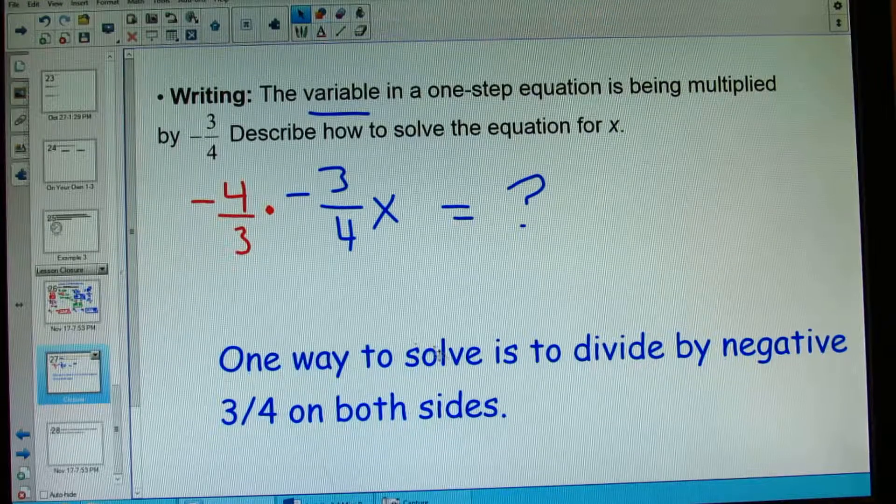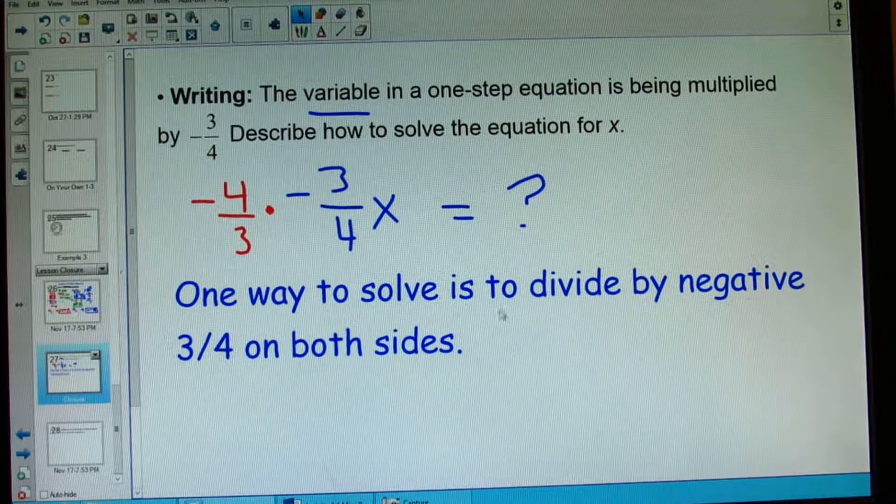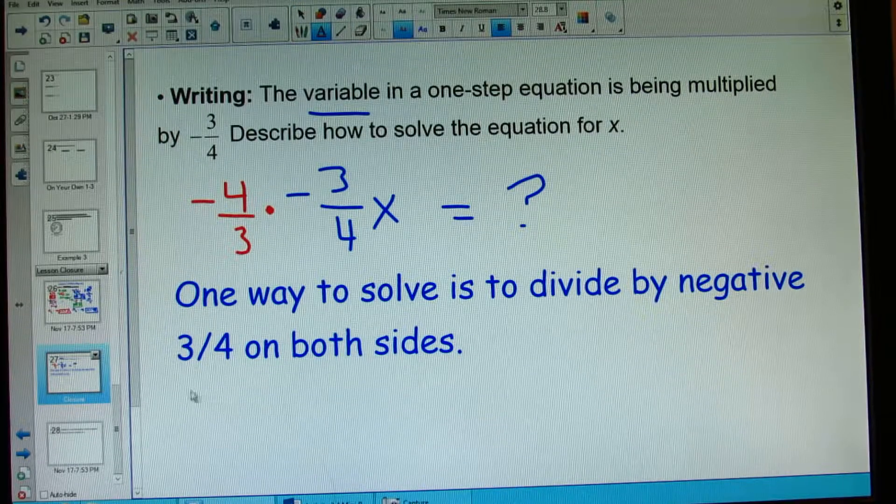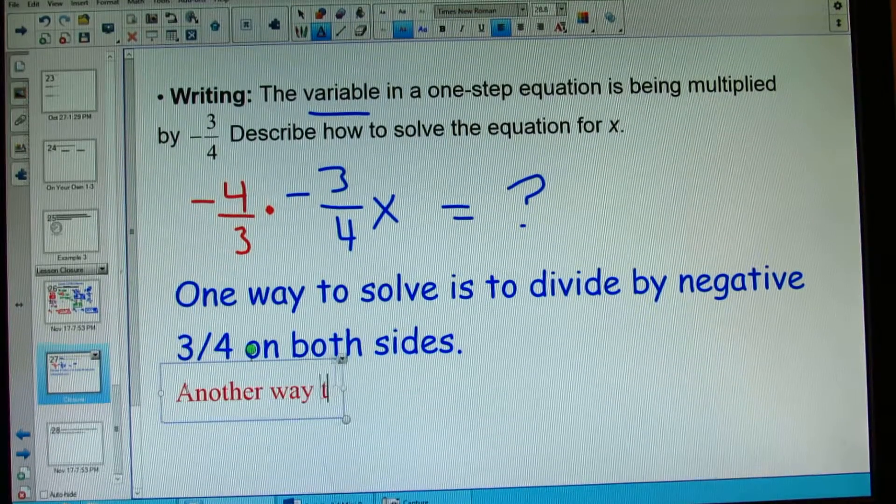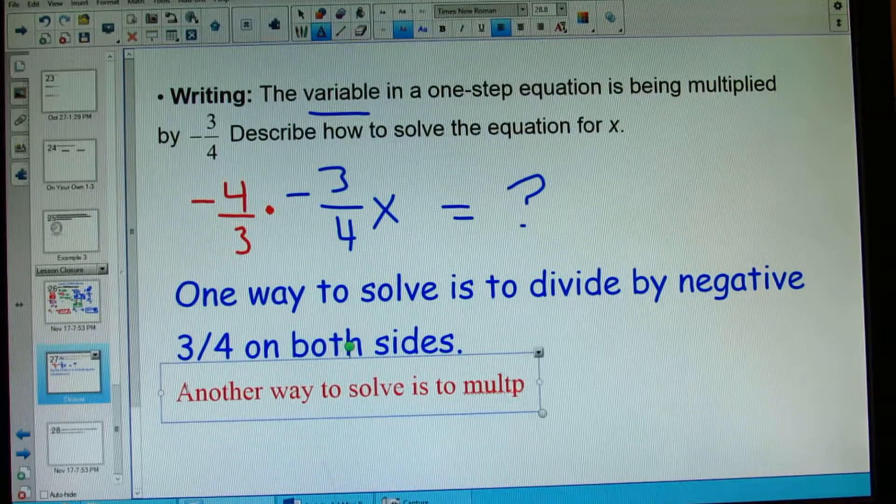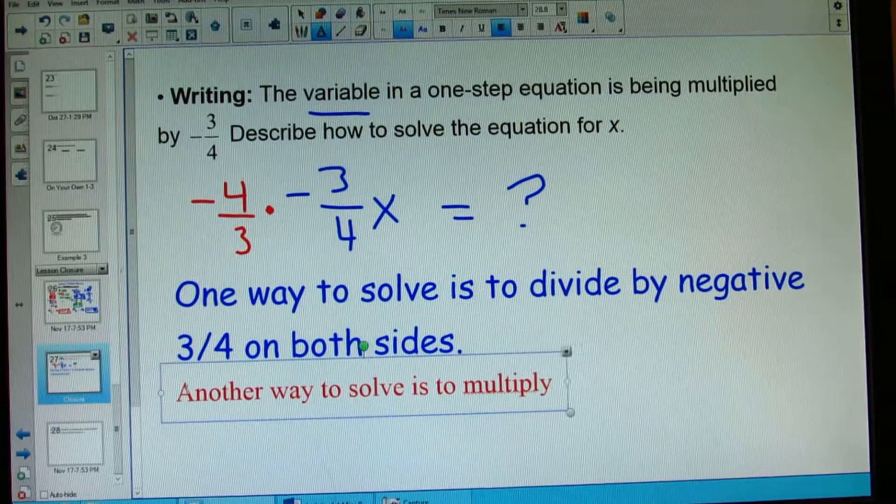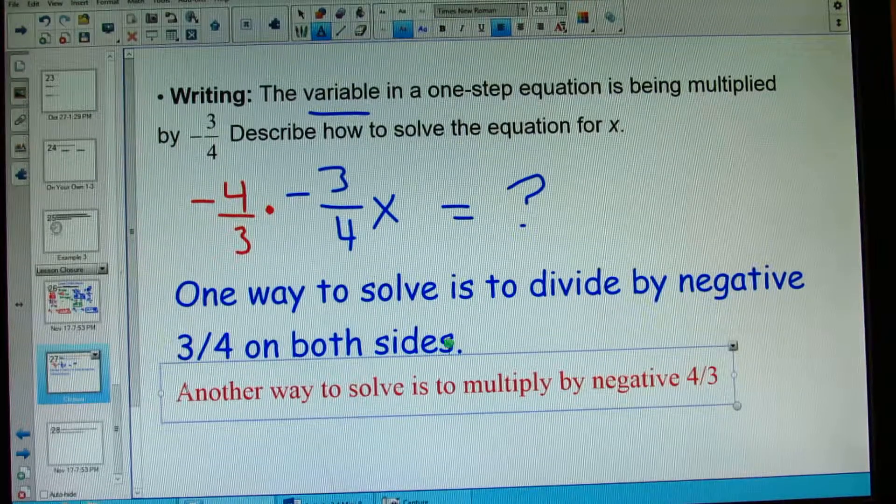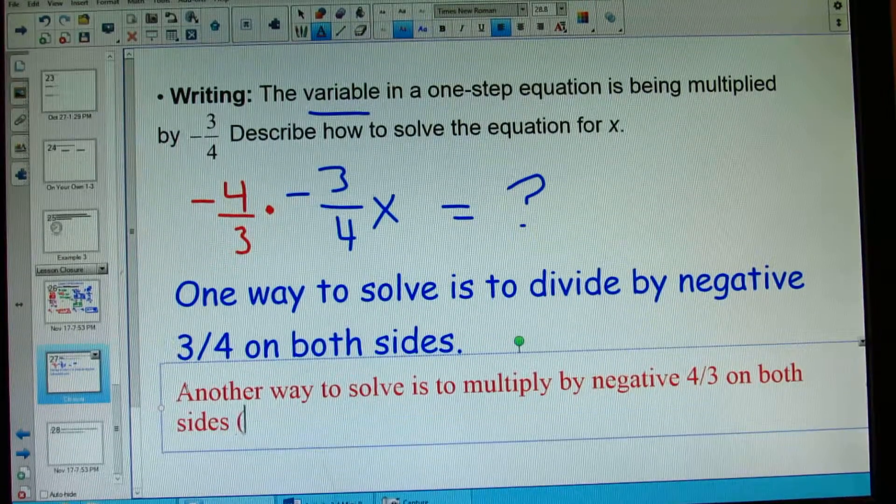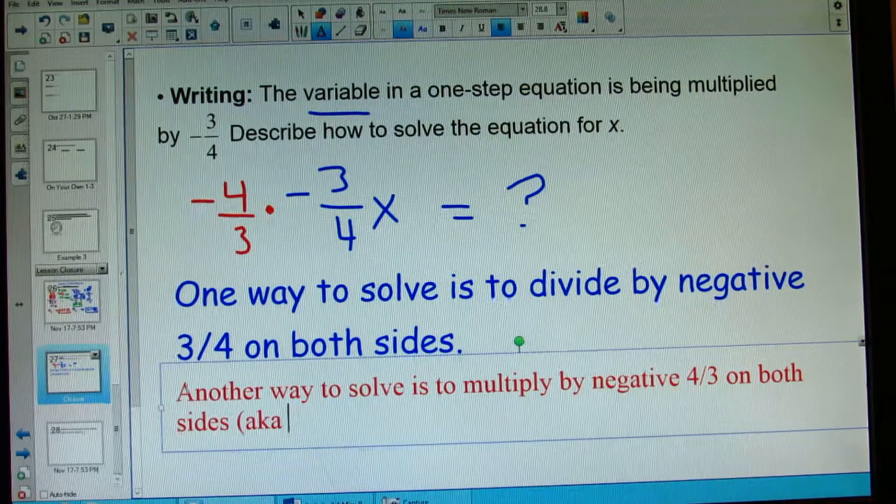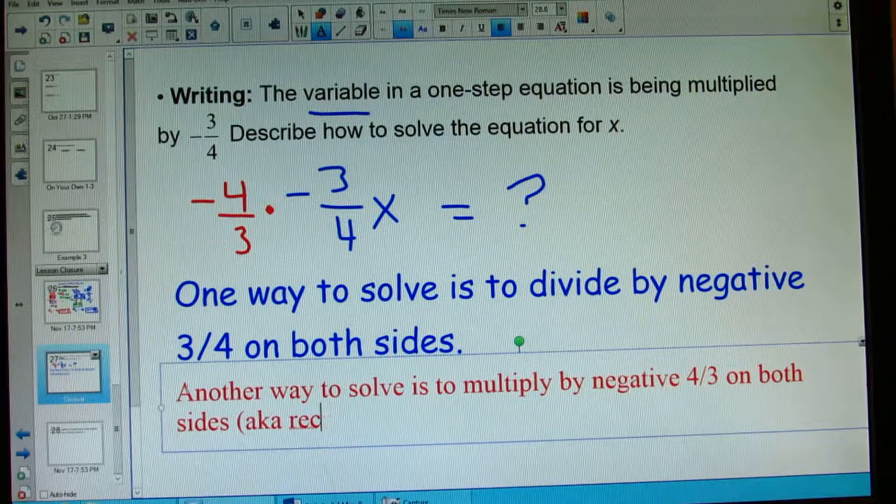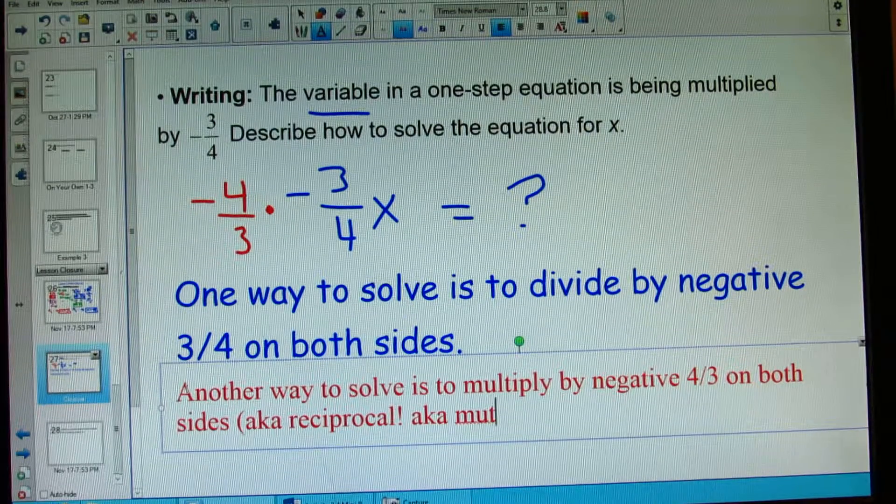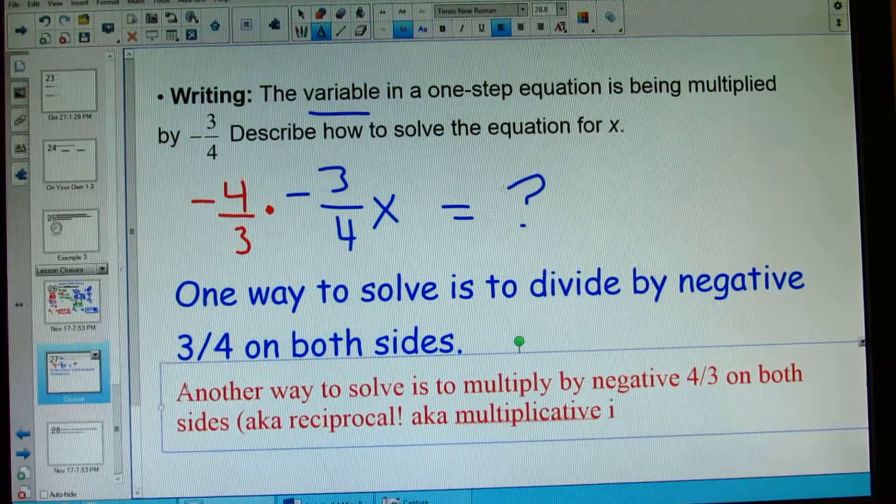So one way to solve is to divide by negative 3 fourths on both sides. Another way to solve is to multiply by negative 4 thirds on both sides, also known as the reciprocal, a.k.a. multiplicative inverse.